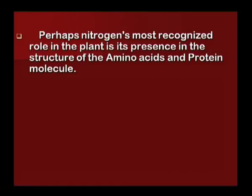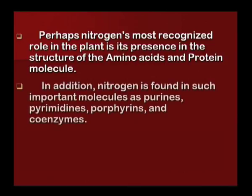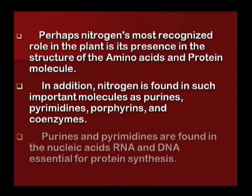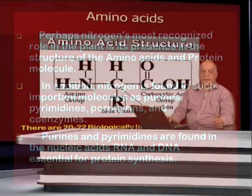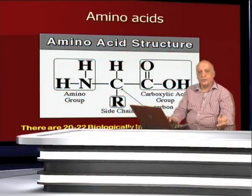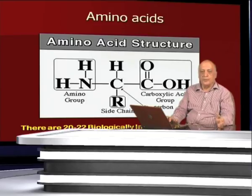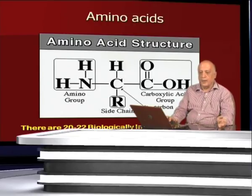Perhaps nitrogen's most recognized role in plants is its presence in the structure of amino acids and proteins. In addition, nitrogen is found in pyrimidines, porphyrins, and coenzymes. Pyrimidines and purines are found in nucleic acids like RNA and DNA. Nitrogen is one of the most important constituents of plant metabolites like proteins, amino acids, porphyrins, coenzymes, DNA, and RNA.